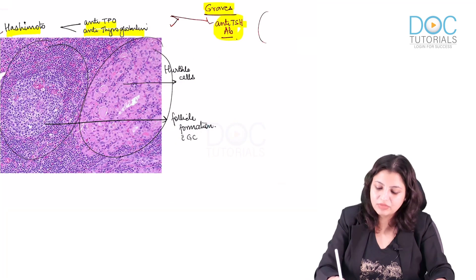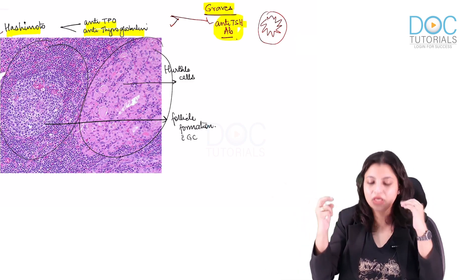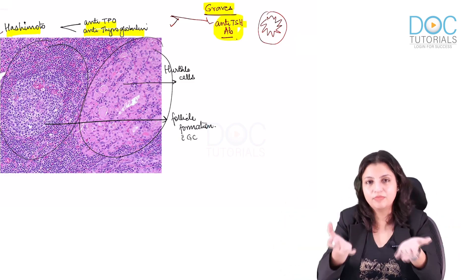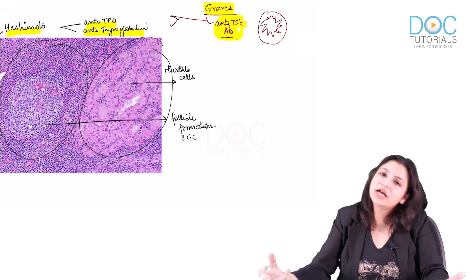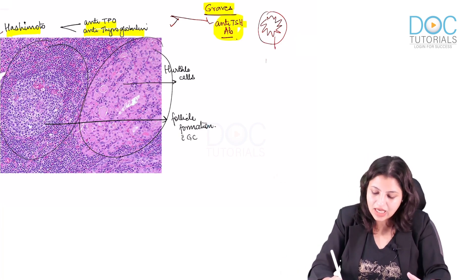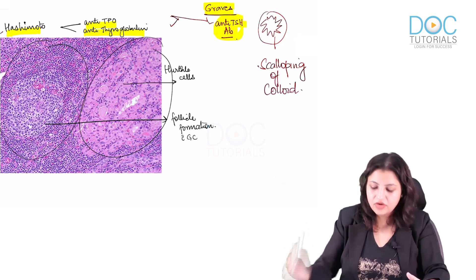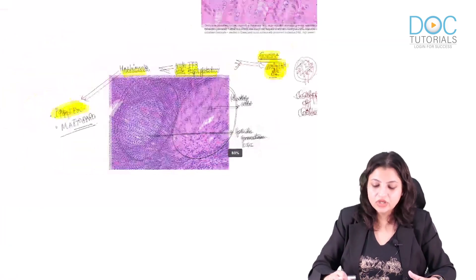In Graves disease, the microscopy typically shows scalloping of colloid, reflecting hyperactivity. When you see scalloping of colloid, you order anti-TSH antibodies, which are typically present in Graves disease.